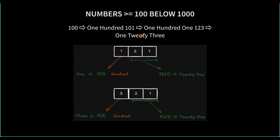For example, to convert 121, we divide by 100 to get 1, pass it to the recursive function to get 'One', then concatenate 'Hundred', and take 121 modulo 100 to get 21, which the recursive function returns as 'Twenty One'. So we get 'One Hundred Twenty One'. Similarly for 321, dividing by 100 gives 3, modulo 100 gives 21, and we get 'Three Hundred Twenty One'.